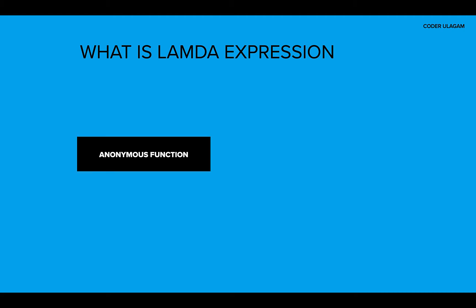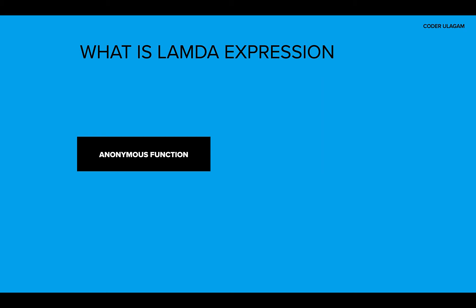A lambda expression is nothing but an anonymous function. In Java, any code we write is written within a class and within a method — you create classes, create methods, and write business logic inside the method. But imagine you don't have to write all that boilerplate code of creating a class and method signatures; you can just write the functionality as an expression. That's why lambda expressions are so powerful — it is a concept called functional style programming.